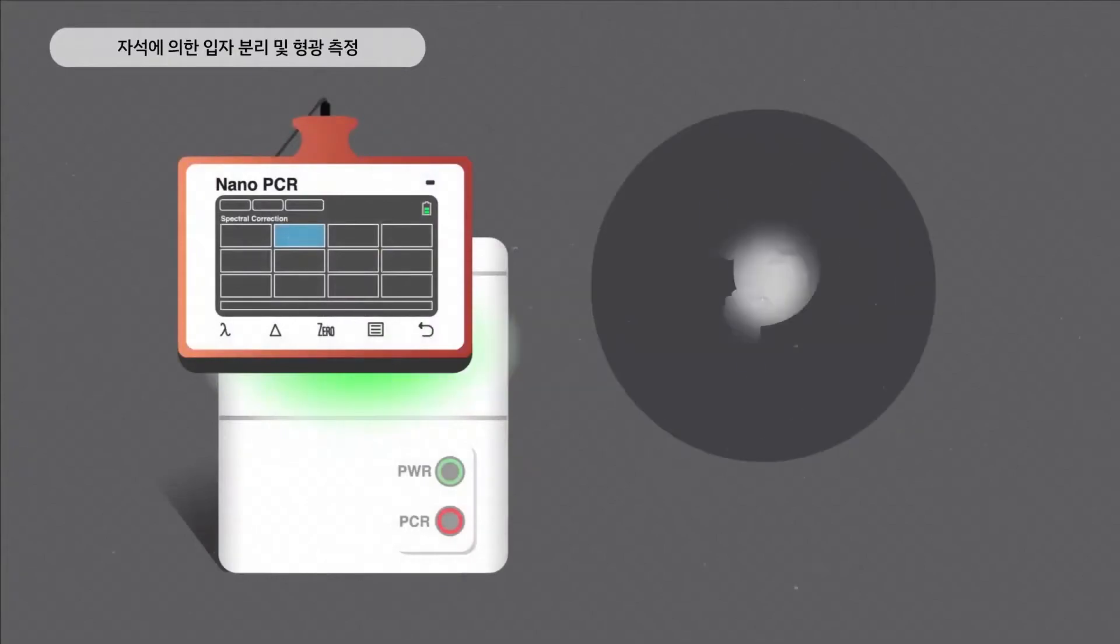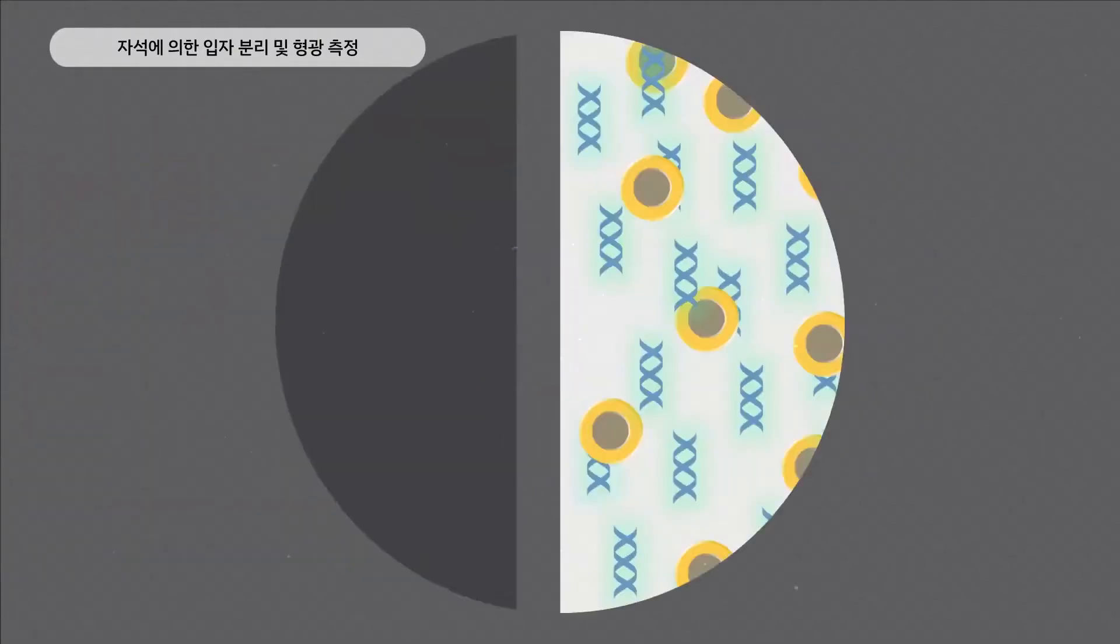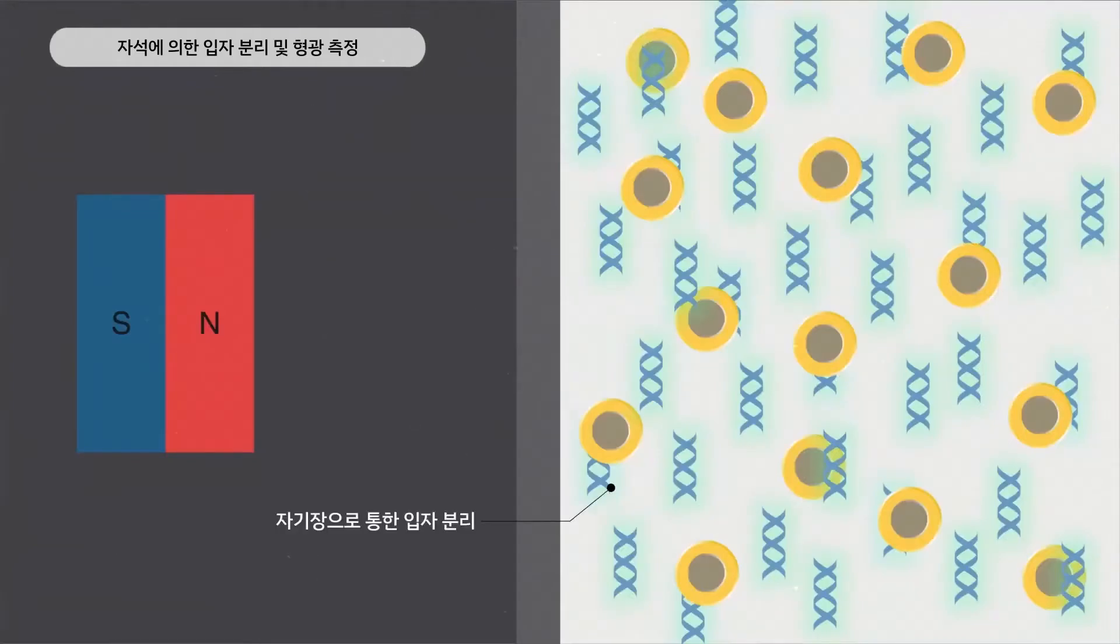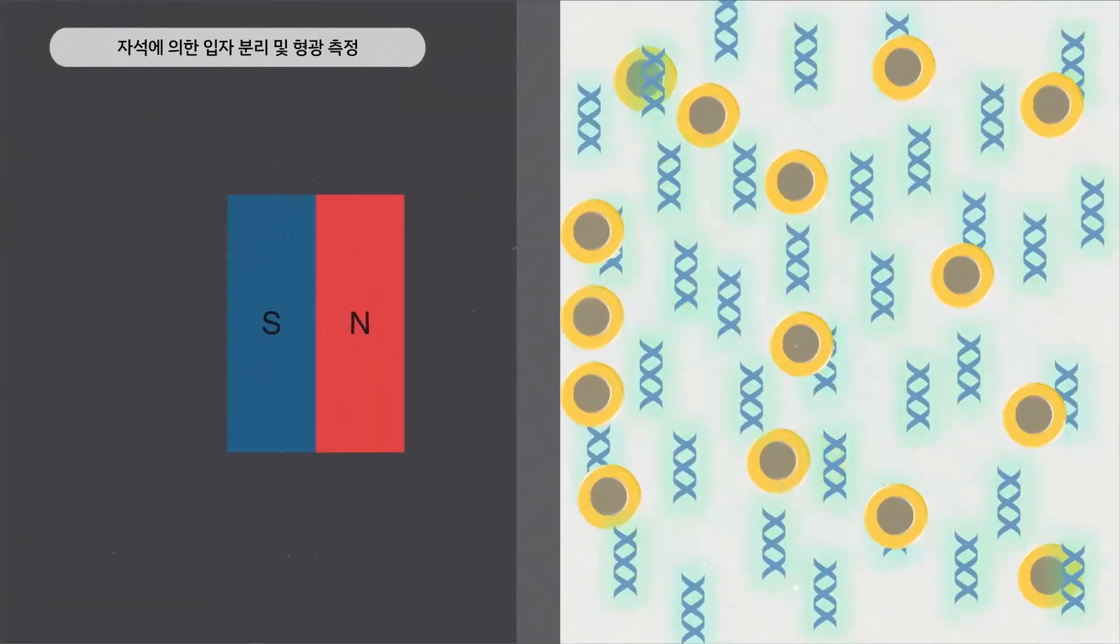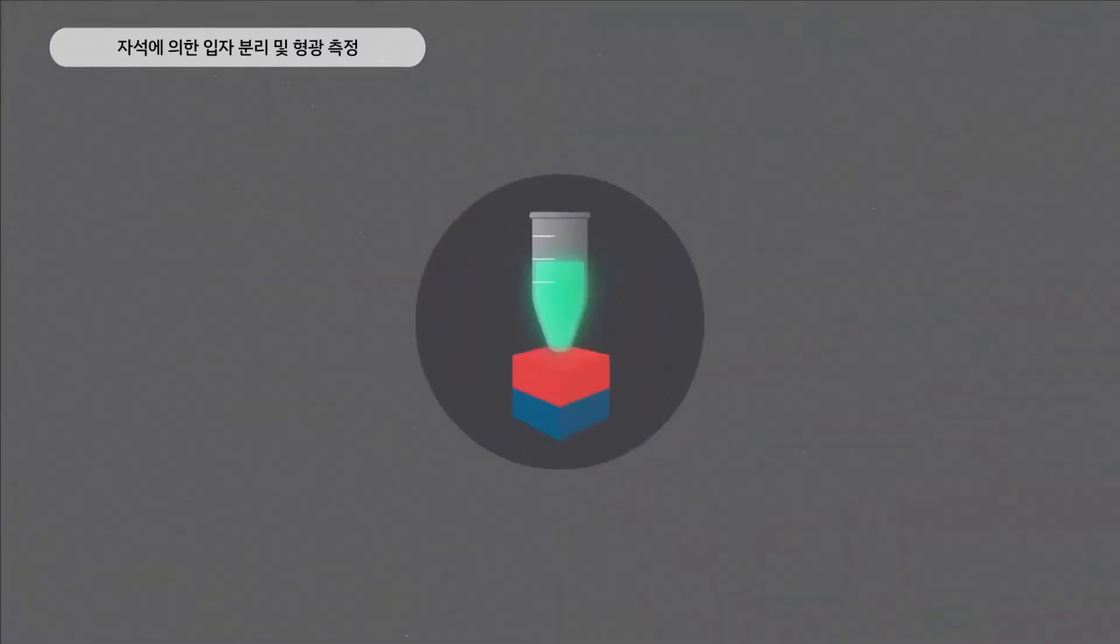After RT-PCR, diagnostics is then performed within the nano-PCR machine. The process takes advantage of the magnetic property of the MPN. The magnet is used to separate the MPN from the sample. This allows the sample to be quickly cleared of the MPN so that the DNA can be fluorescently analyzed for the presence of viral genes.